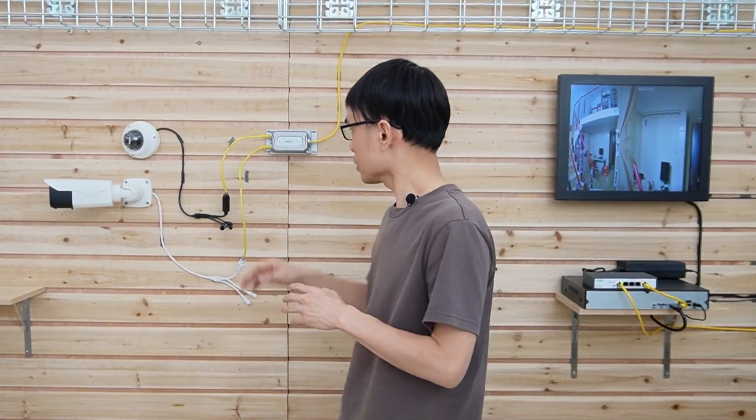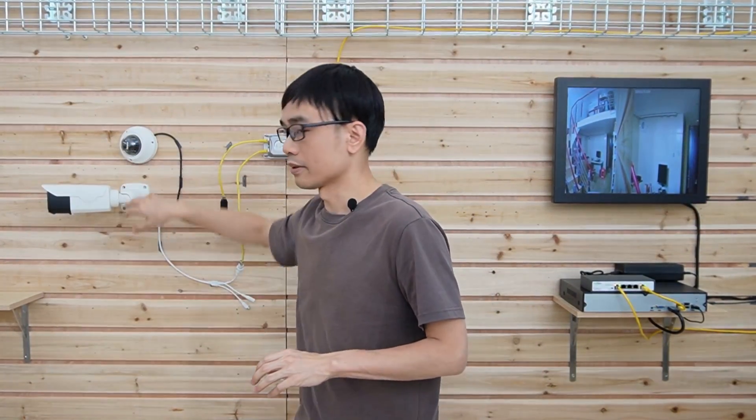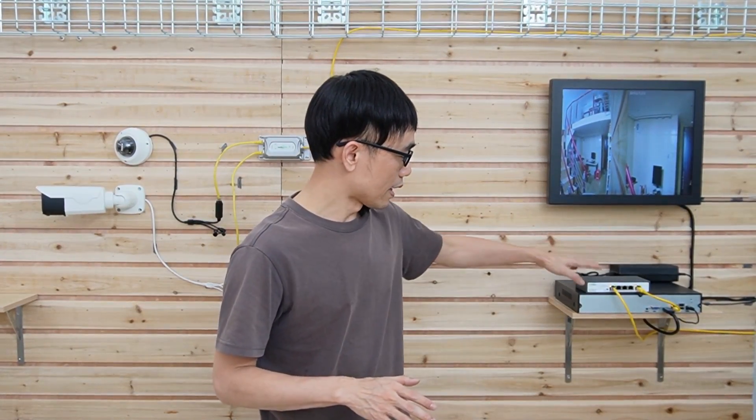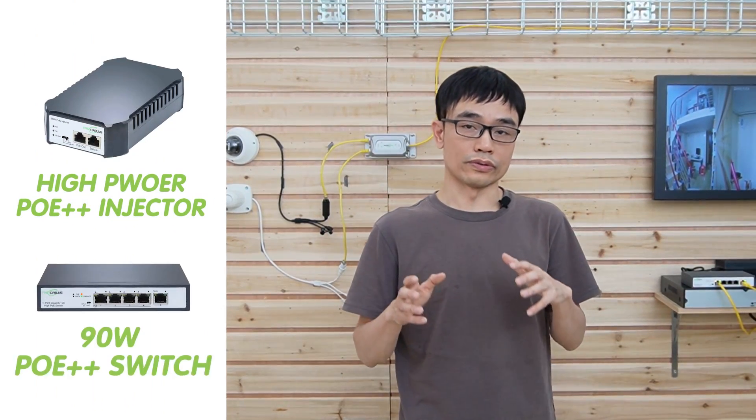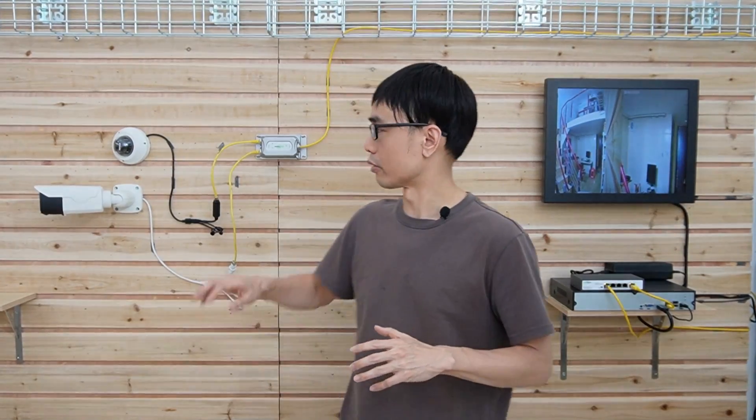There are several things to pay attention to when using this PoE extender. The first is power budget. We're using a single cable to carry two PoE IP cameras. These two cameras are very small and require a small power budget, so it will still work if we're using PoE Plus, which can output 30W. However, if we're using a high-power PoE camera like the pan/tilt zoom camera and only using standard PoE at 30W, it may not be enough to supply power for two cameras. In that case, we can use a high-power PoE injector or a 90W PoE switch to supply power to the PoE extender, giving enough power for both cameras.